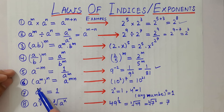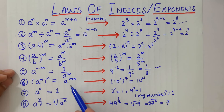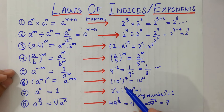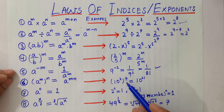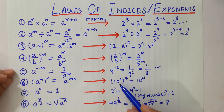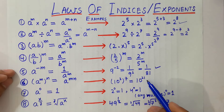Next, a raised to the power m, whole raised to the power n, is always equal to a raised to the power m times n. For example, 10 cubed whole raised to power 7 is equal to 10 raised to the power 3 times 7, which equals 10 raised to the power 21.